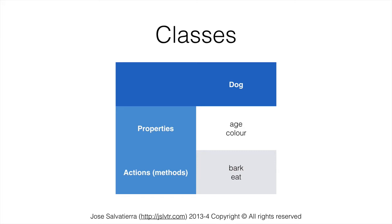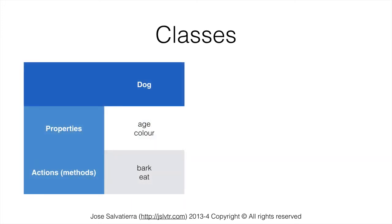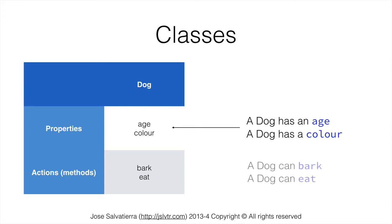Our properties are going to be age and color, and the actions it can do are bark and eat. So, a dog has an age, a dog has a color — age and color are things that a dog has. A dog can bark and a dog can eat, so barking and eating are things a dog can do. This is why they're actions. Age and color are properties and they're going to be variables in our program. Bark and eat are actions it can do, and they're going to be methods in our program.